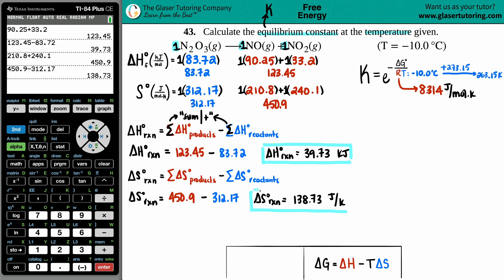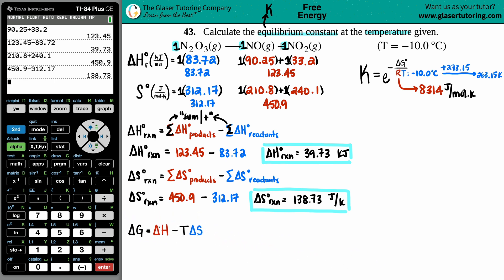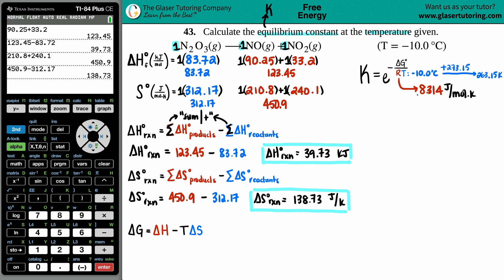Now we use ΔG = ΔH − TΔS. We have ΔH = 39.73 kJ, ΔS = 138.73 J/K, and T = 263.15 K. The problem is ΔH is in kilojoules but ΔS is in joules — they must match. Since R requires joules, we convert ΔH to joules by multiplying by 1000: 39.73 kJ becomes 39,730 J.